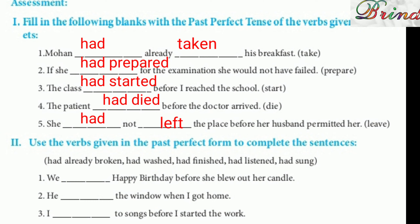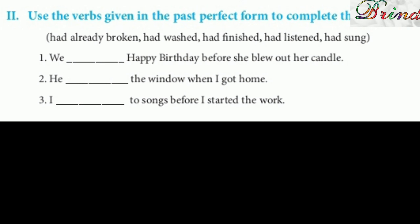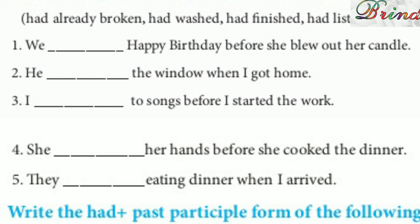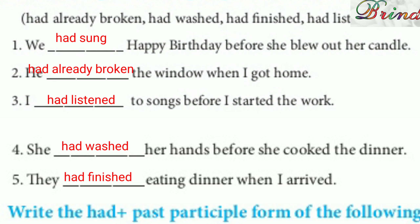Roman numeral two: use the verbs given in past perfect form to complete the sentences. The words are: had already broken, had washed, had finished, had listened, had sung. First: 'We had sung happy birthday before she blew out the candle.'